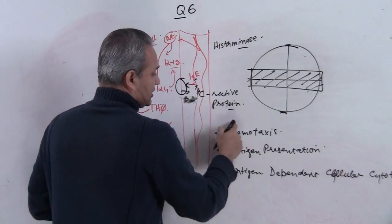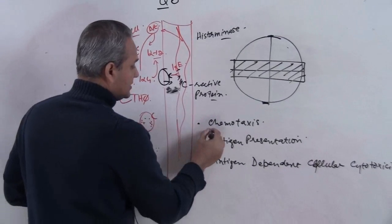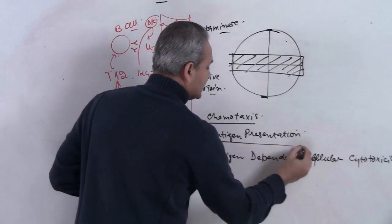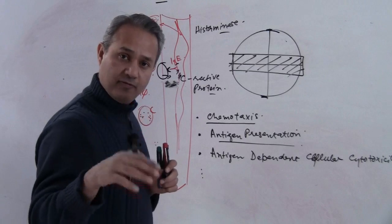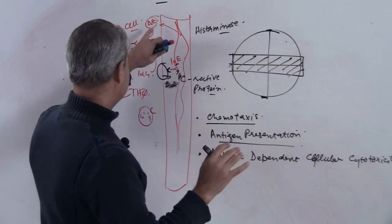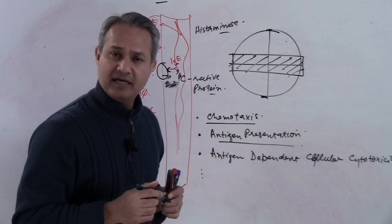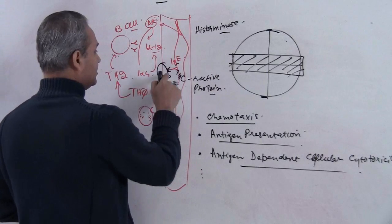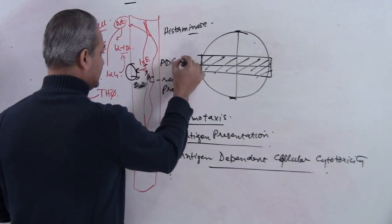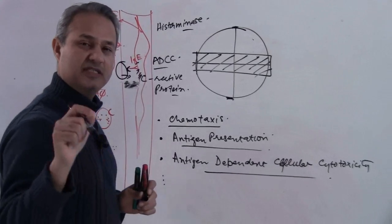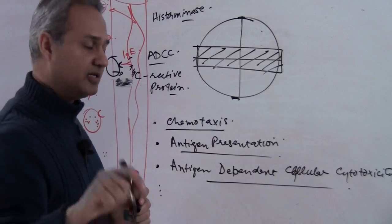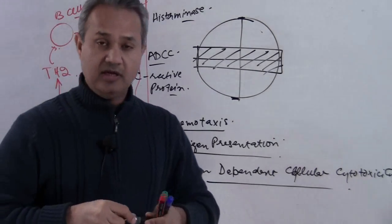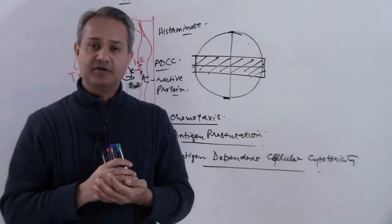So if we come back here, what is the function of the eosinophil? Is it chemotaxis? Yes, they are chemotactic, but that is not really their primary function. Is this antigen presentation? Yes, they can do that. But again, that is not their primary function. Antigen-dependent cellular cytotoxicity, so yes, this mechanism here is called ADCC. Antigen-dependent cellular cytotoxicity, this is a very important mechanism and please do not forget that. There could be other options here in the question as well, but this is the primary answer. Thank you very much.